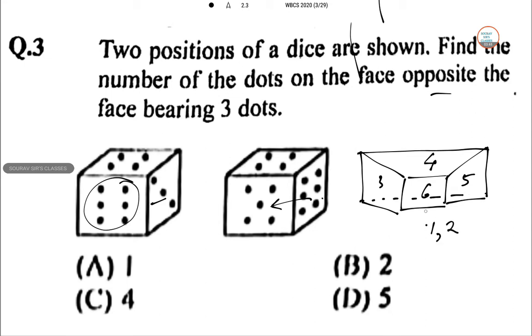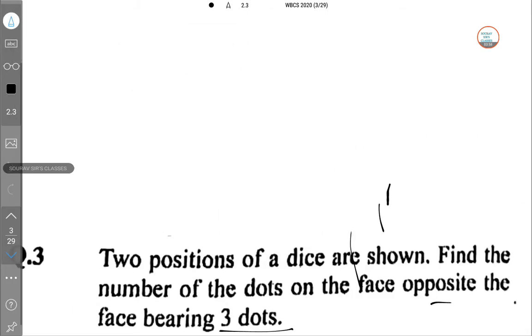So either 1 may be 2 in the lower side or in the opposite side to the 6 or vice versa. But that is for sure that 3 and 5 are opposite to each other. So the answer is 5. Option D. Next. Question number 4.